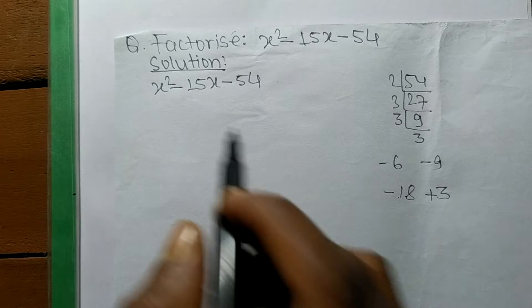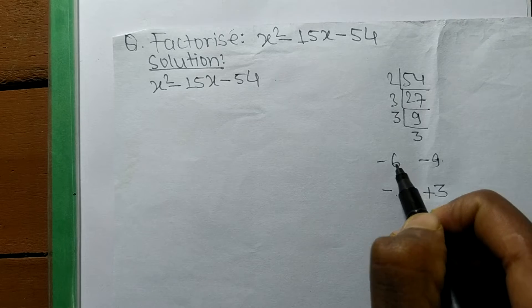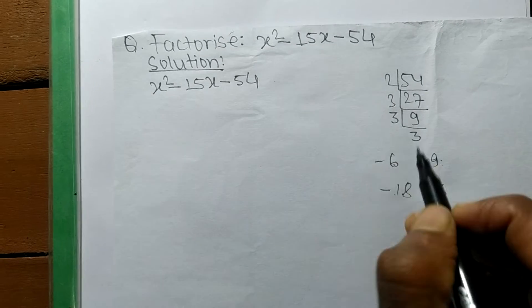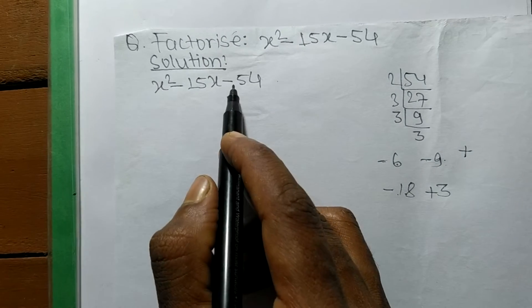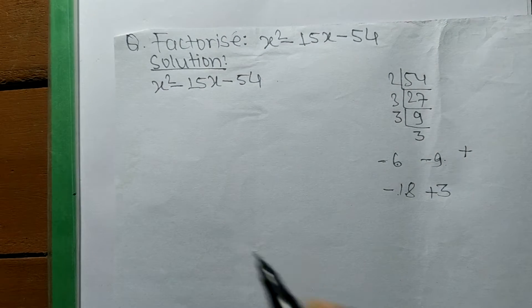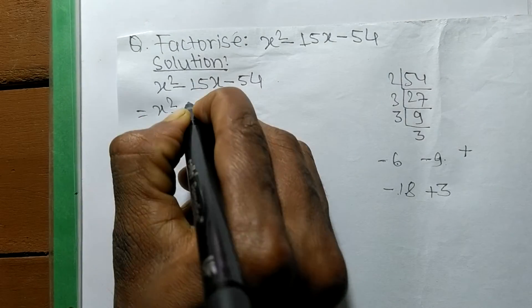Also, 6 times 9 equals 54, but minus times minus gives plus, whereas we need -54. So we can write the expression as x² - 18x + 3x - 54.